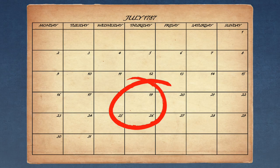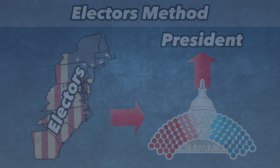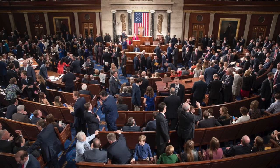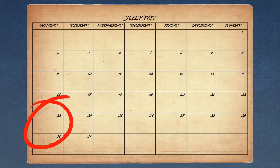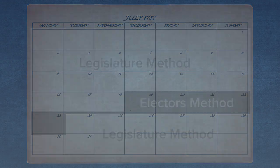On July 19th, the convention passed an electors' convention method, where a body of electors would gather at the seat of government to choose a president. A few days later, however, they reverted back to the legislature method. This marks the only time the convention passed an appointment method other than the legislature method and the eventual electoral college.